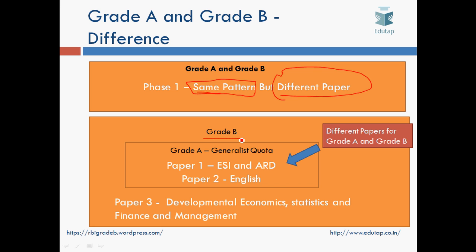Coming to Phase 2, both Grade A and Grade B consist of Paper 1 and Paper 2. Paper 1 is ESI and ARD, and Paper 2 is English. We are talking about Journalist Quota seats. NABARD this year has differentiated the seats between Journalist Quota and Specialist Quota. In Journalist Quota, Paper 1 is ESI and ARD, whereas in Specialist Quota the paper is for a person belonging to their individual specialization. But in this video, our focus is on Journalist Quota seats where Paper 1 is ESI and ARD. We are not going to talk about specialized seats or specialized papers in this video.